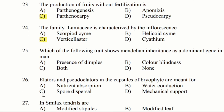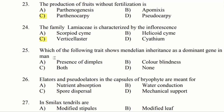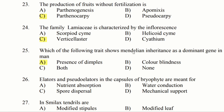Question 25: Which of the following shows Mendelian inheritance as a dominant gene in man? Option A: presence of dimple. Option B: color blindness. Option C: both. Option D: none. The answer is presence of dimple, Mendelian inheritance as a dominant gene.